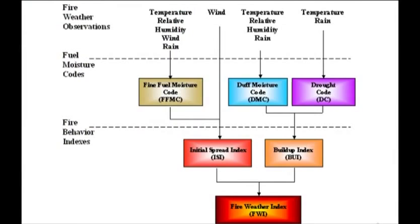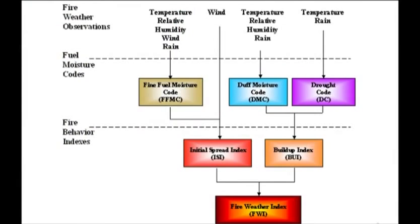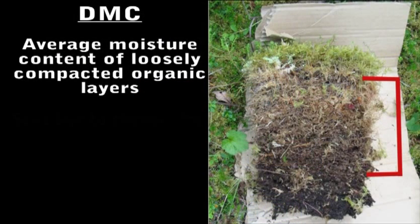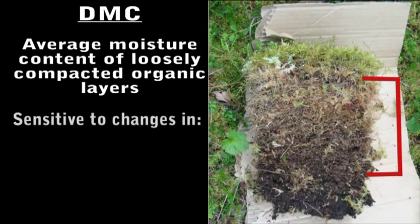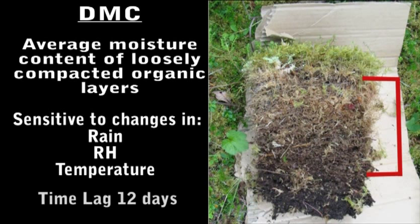The Duff Moisture Code, or DMC, represents the moisture content of loosely compacted duff that determines resistance to control. DMC is sensitive to rain, relative humidity, and temperature with a time lag of approximately 12 days.